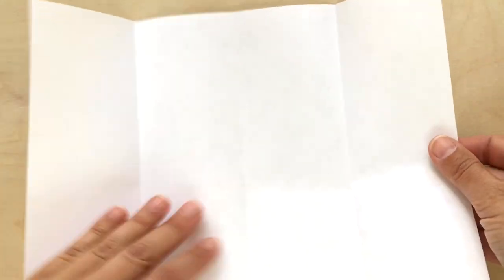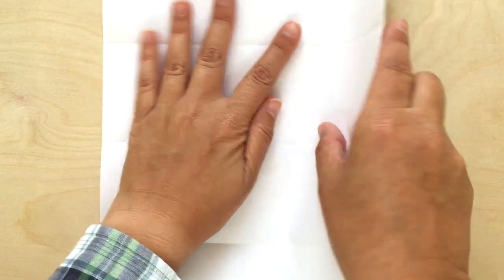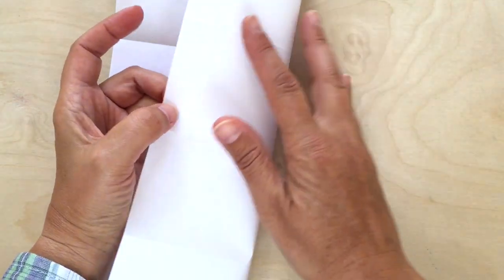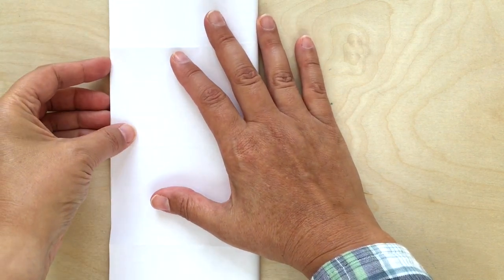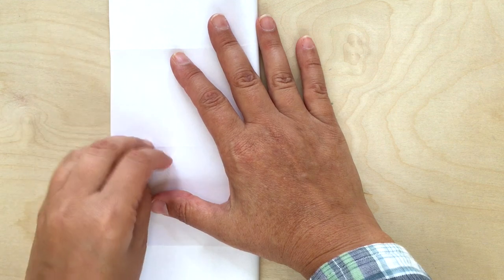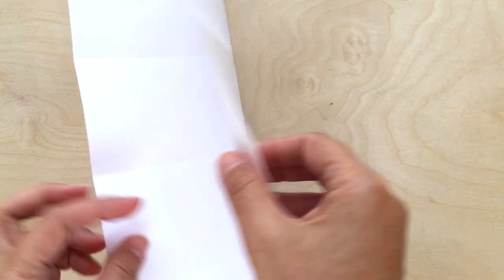So here's what we have so far and then what we're going to do is just fold it in half in the other direction. So this is the long direction. Once again lining up your edges and then giving it a really good crease. And that's all the folding that we have to do.